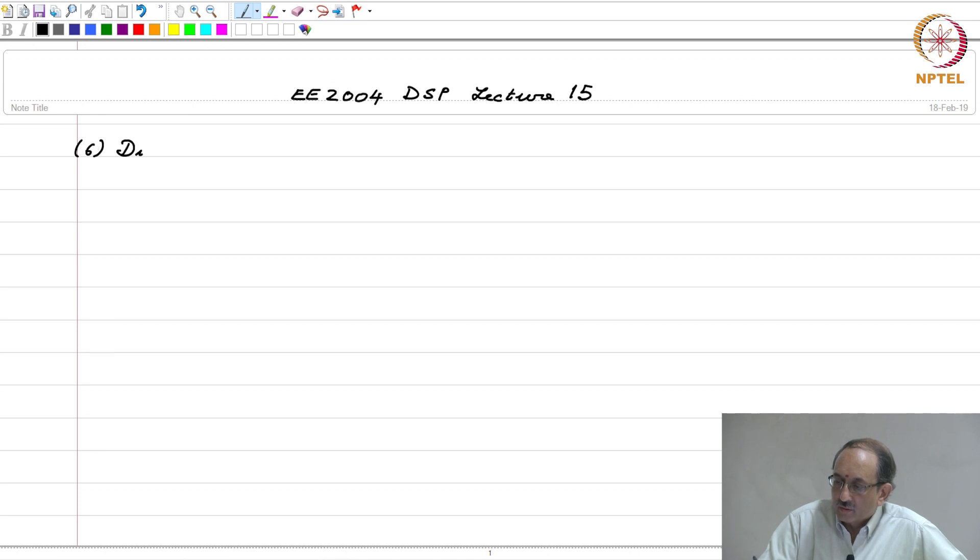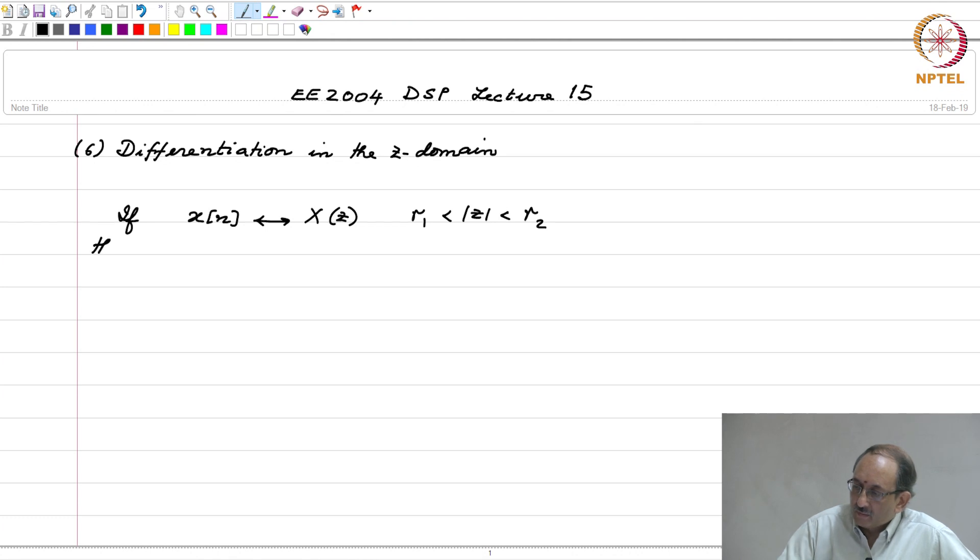So, we are now going to look at the next one. This is differentiation in the Z domain. If X of N has Z-transform X of Z with this ROC, then N times X of N has Z-transform minus Z times d by dz of X of Z and ROC is same.